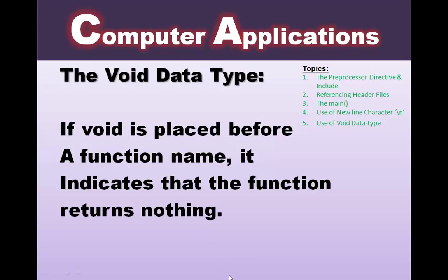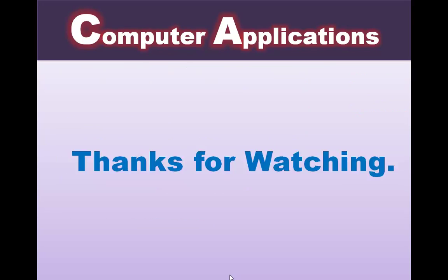The void data type is used by placing it before a function name. It indicates that the function returns nothing. If you do not know the data type being used, you can use void to stop the function from receiving or returning values. That covers all the basics, and I hope you liked it — thanks for watching.